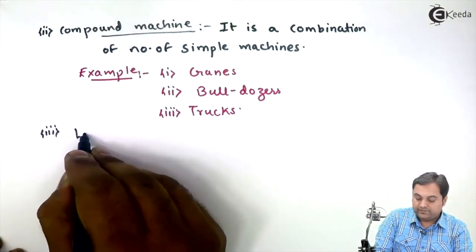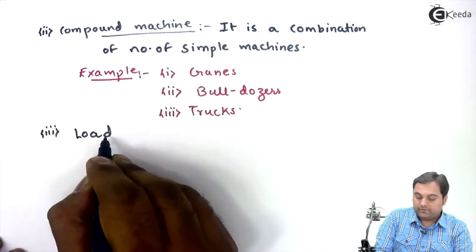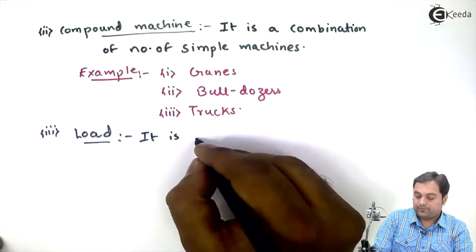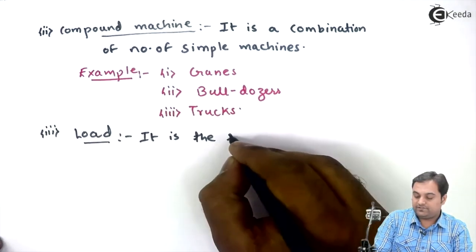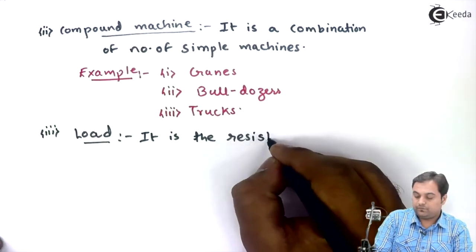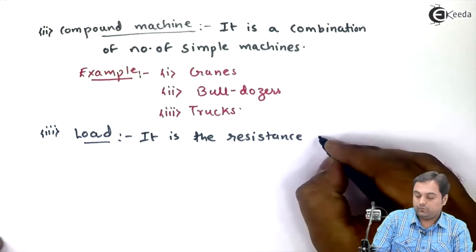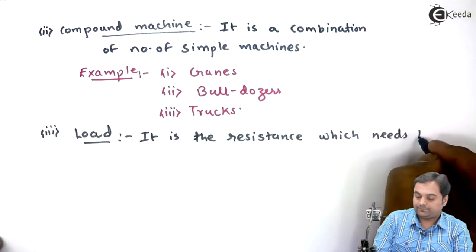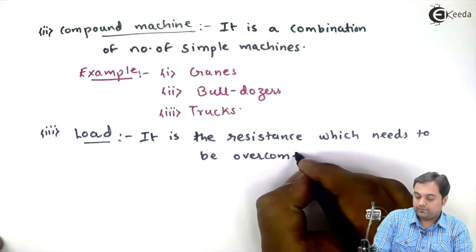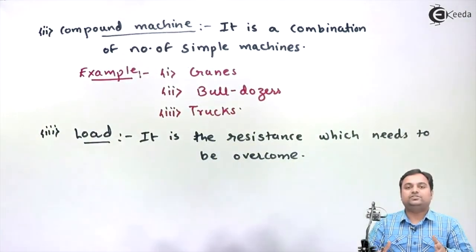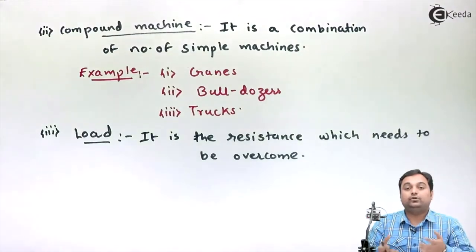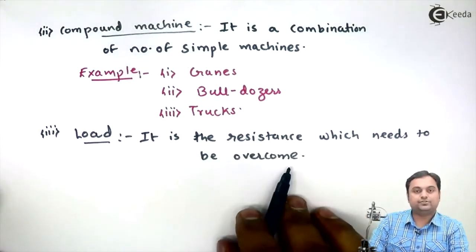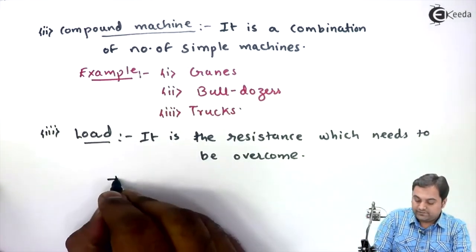The next definition is important - that is called Load. Load is the resistance which needs to be overcome. If we want to lift a certain load, then that load becomes a resistance to us. So it is the resistance which needs to be overcome. It is denoted by capital W.